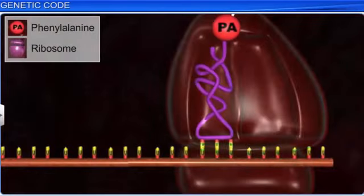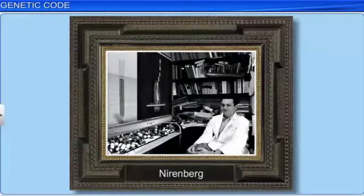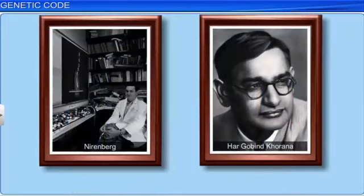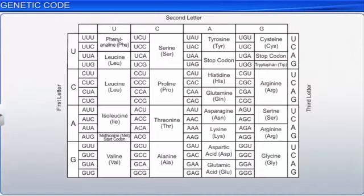This suggested the triplet UUU codes for the amino acid phenylalanine. Nirenberg and Mattei had finally cracked the genetic code for at least one amino acid. Subsequently, Hargobind Khorana formulated a chemical method to produce well-defined nucleic acids — long strands of RNA with every nucleotide in the exact position. This helped determine the rest of the genetic code, which was expressed in the form of a chart.